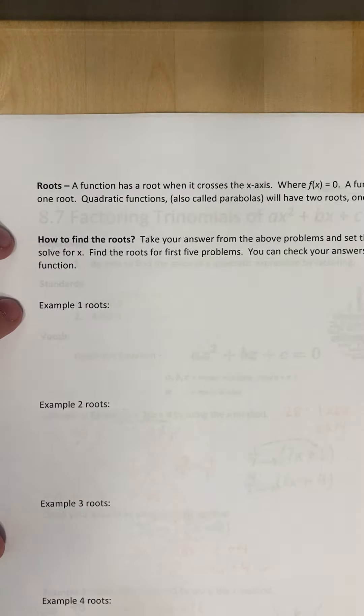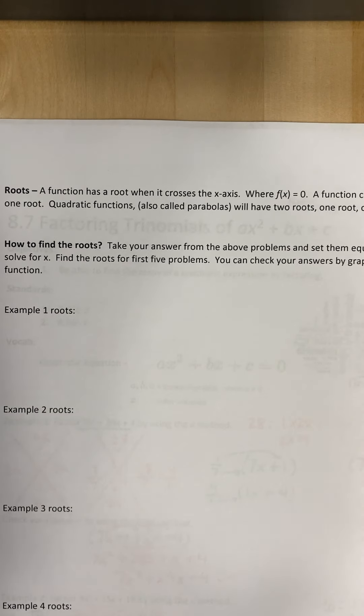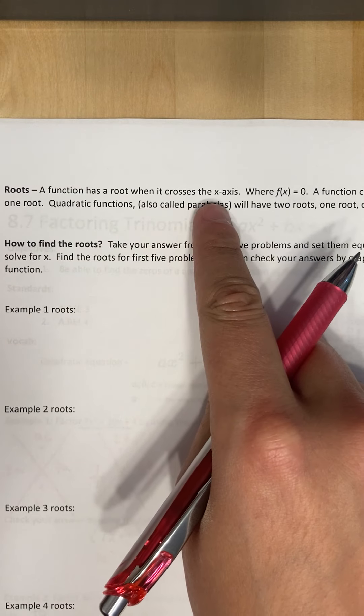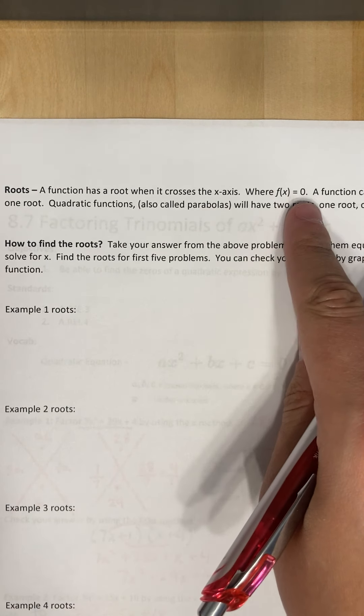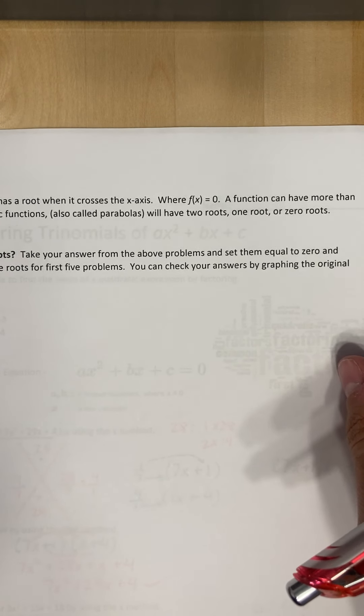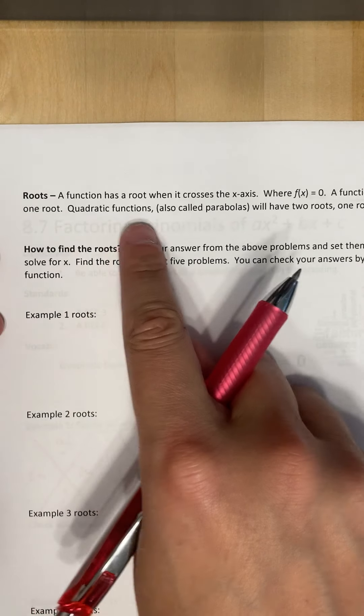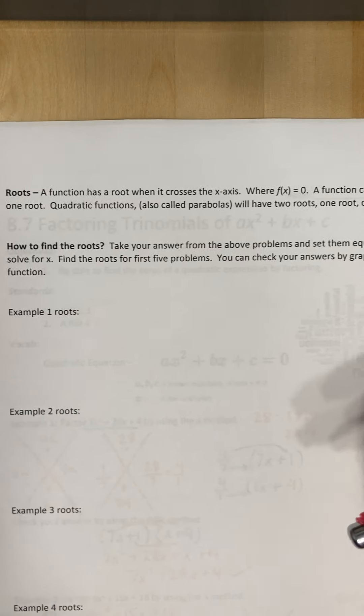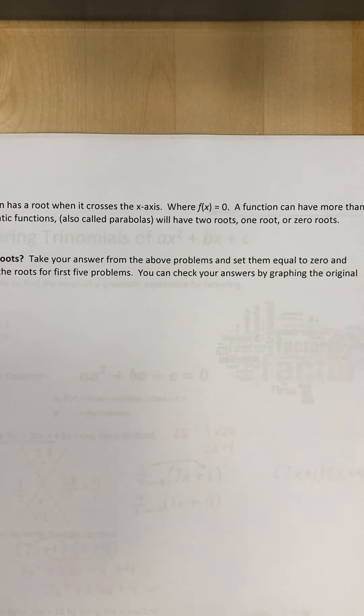So let's look at roots. So the roots, a function has a root when it crosses the x-axis, where f of x equals zero. A function can have more than one root. Quadratics, quadratic functions, also called parabolas, will have two roots, one root, or no roots, zero roots.